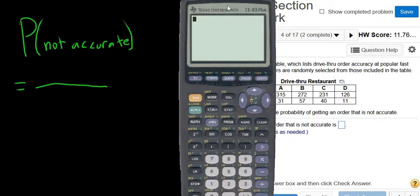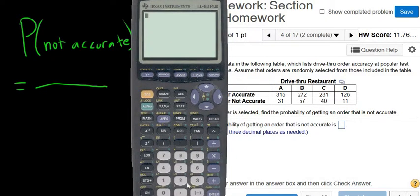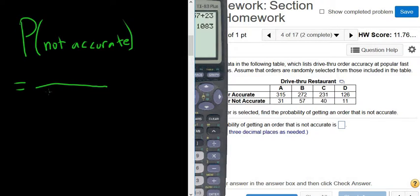Let's go ahead and carefully do that. I'm going to add them all up: 315 plus 31 plus 272 plus 57 plus 231 plus 40 plus 126 plus 11. So 1,083. That's the total. That number always goes on the bottom. That's the number of ways to get an order.